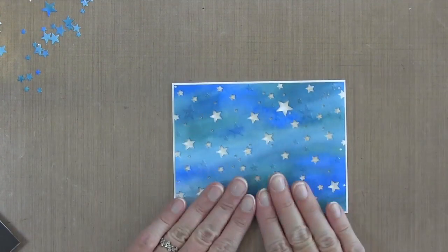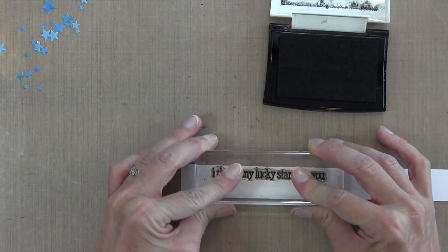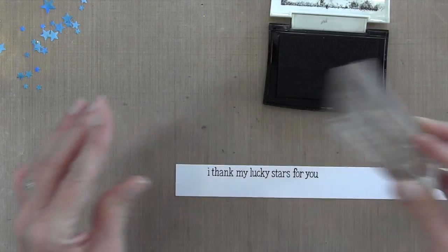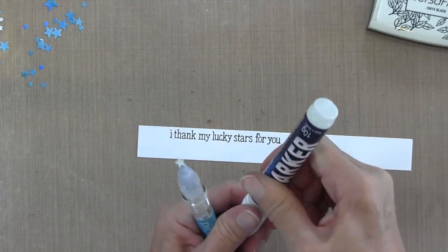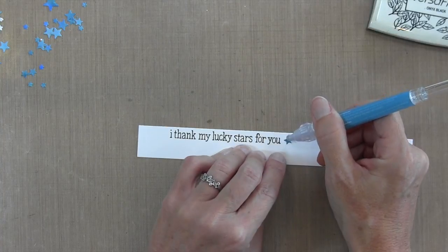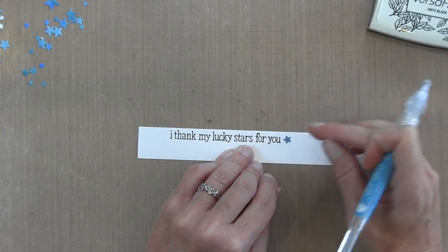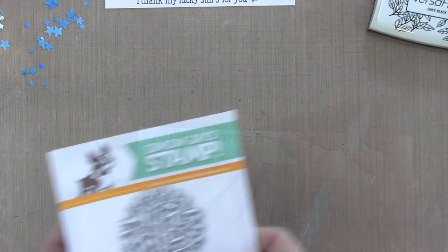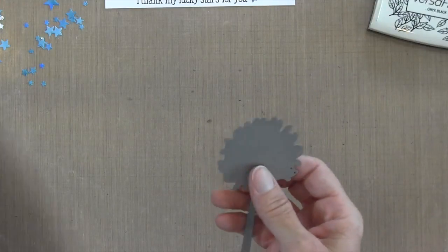My sentiment is going to be on some Neenah cardstock again. I'm stamping it with some VersaFine Black Onyx ink. I wanted to add one of the stars that die cut out of that watercolor panel, so I'm going to use my pick-me-up stick and a glue marker and just put a little star at the end, just to bring the background into the sentiment a little bit.